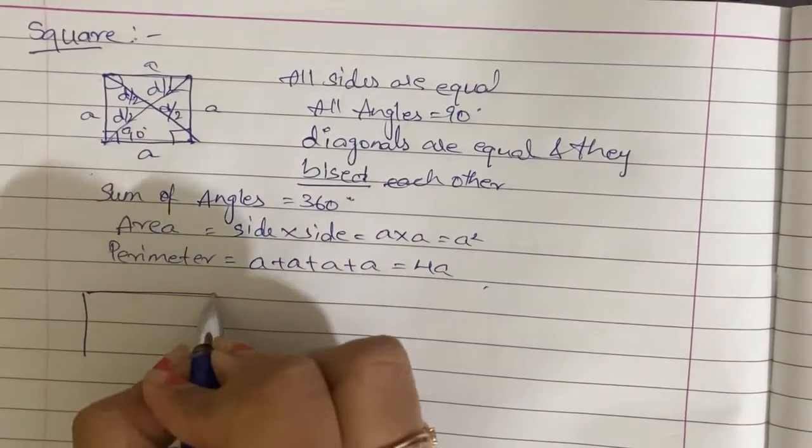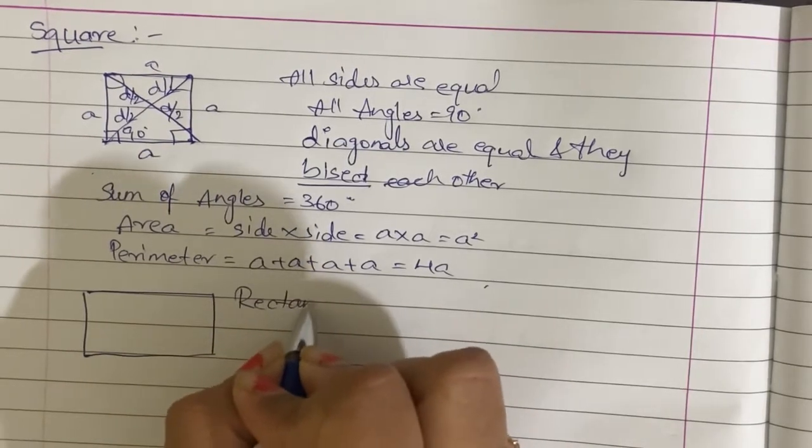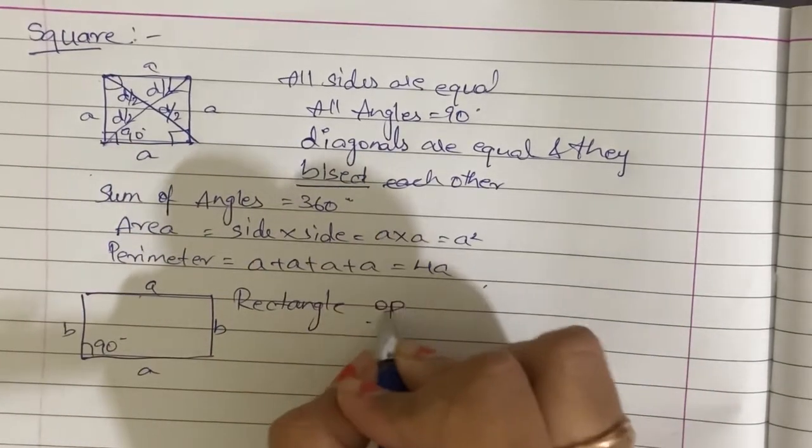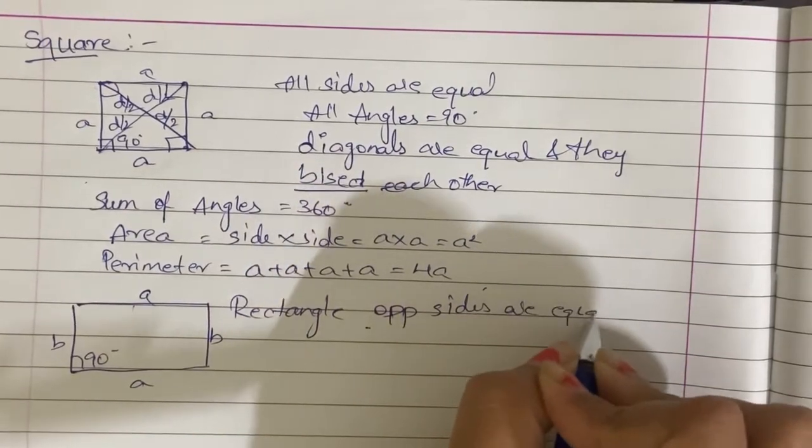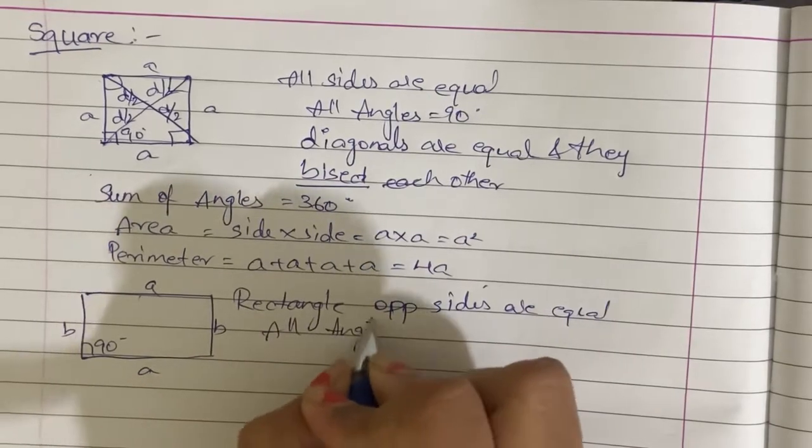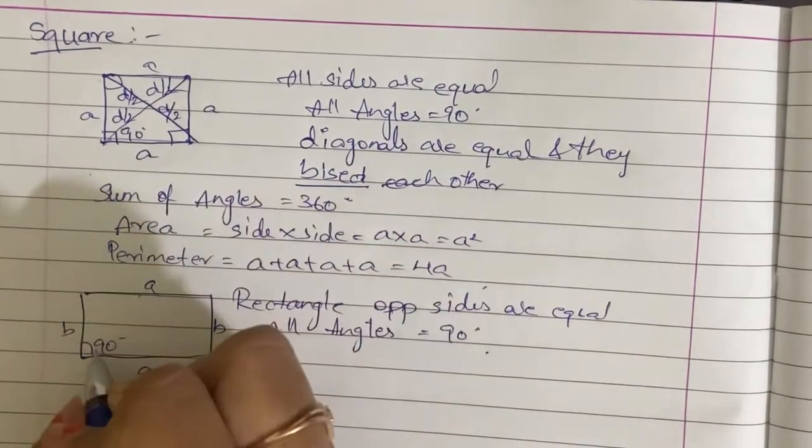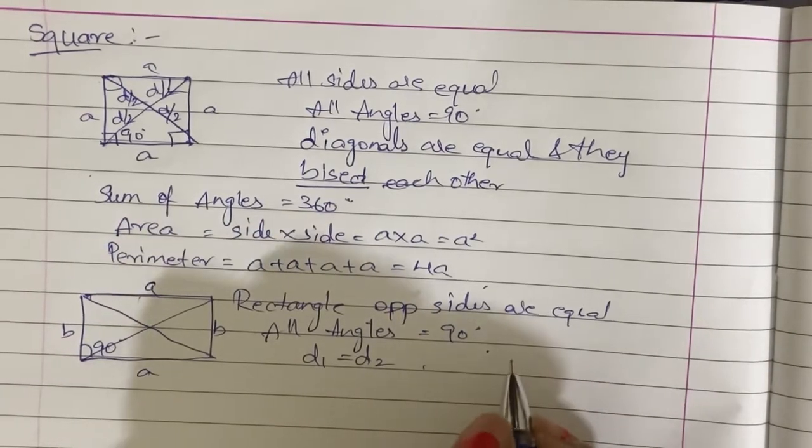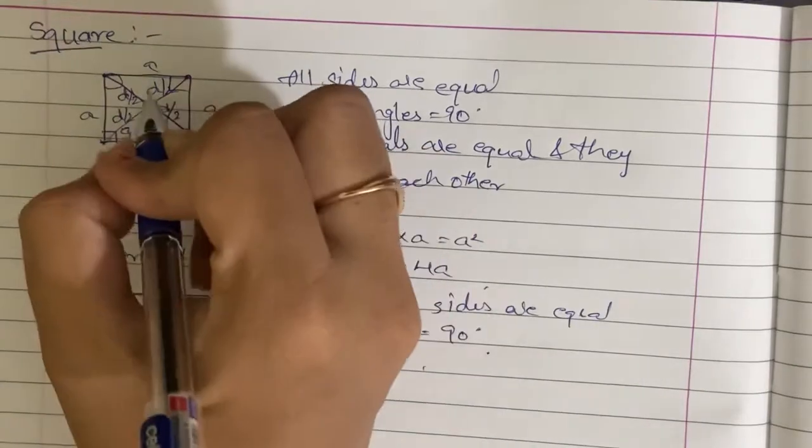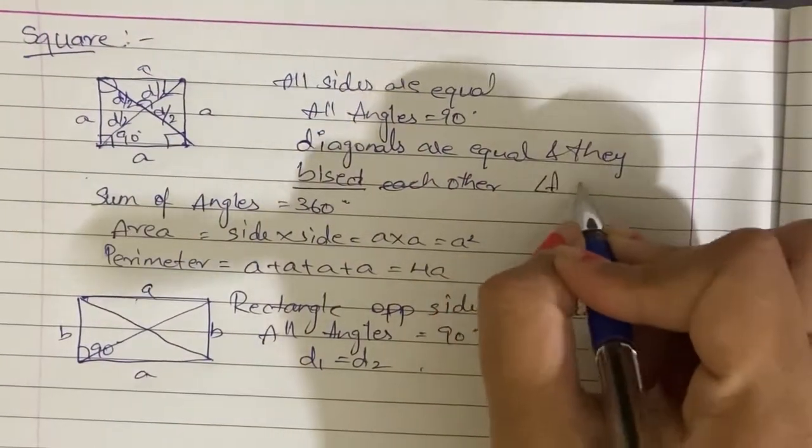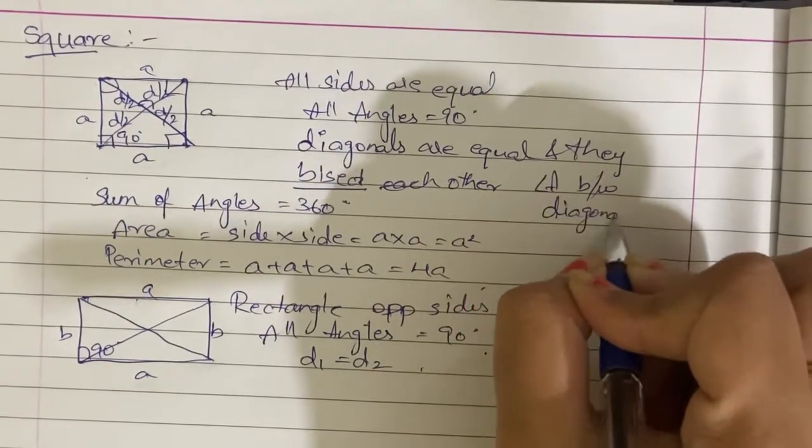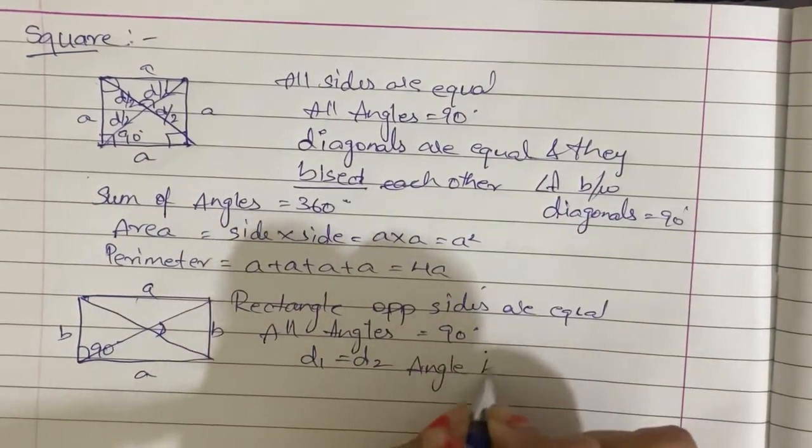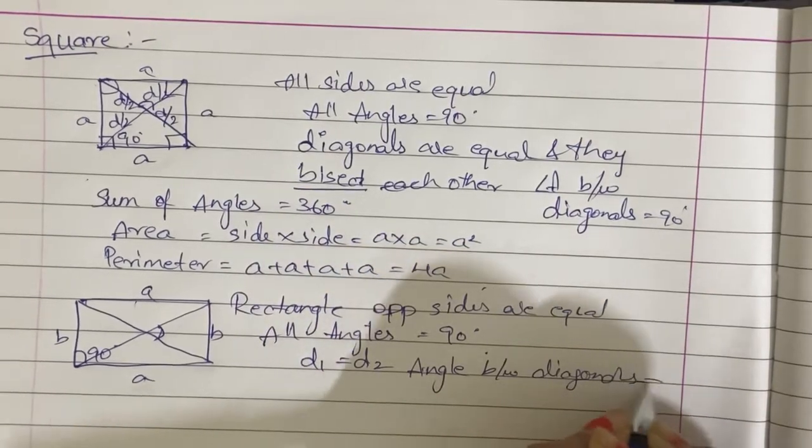Next, we are going to learn about rectangle. In the rectangle, opposite 2 sides will be equal. All angles are 90 degrees, and opposite sides are equal. Diagonals d1 and d2, diagonal d1 is equal to diagonal d2. The angle between diagonals is not equal to 90 degrees.